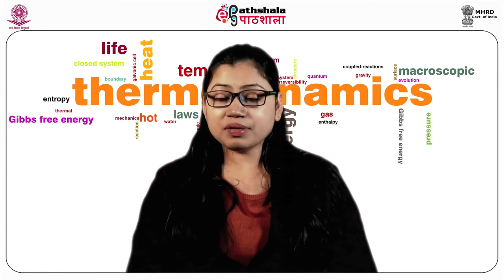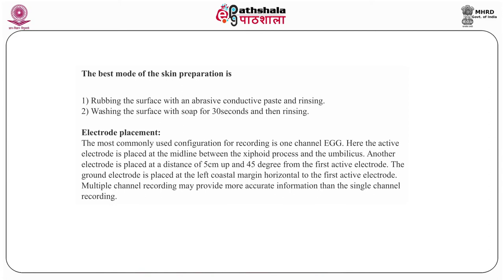Now, the placement of electrodes. The most commonly used configuration for recording is one-channel electrogastrography. The active electrode is placed at the midline between the xiphoid process and the umbilicus. Another electrode is placed at a distance of 5 cm up and 45 degrees from the first active electrode. The ground electrode is placed at the left costal margin horizontal to the first active electrode. Multiple channel recording may provide more accurate information than single channel recording.